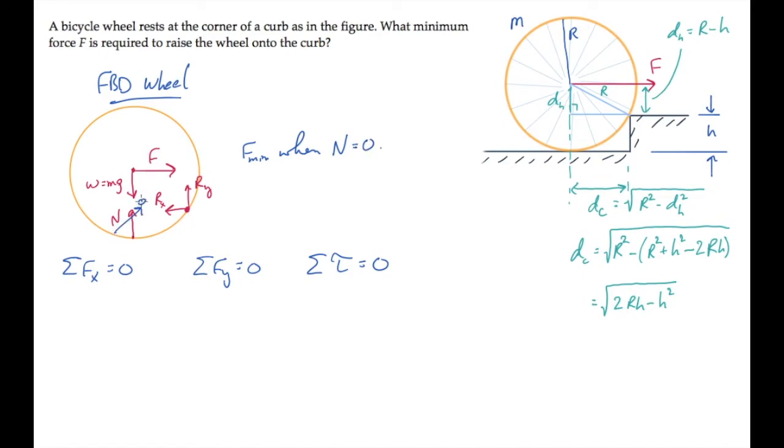This means that we can solve for the force F just by summing torques. I'll sum torques about point A, with torques out of the screen being positive. Rx and Ry create no torque about point A, so we just need to look at the torques due to force F and the weight W of the wheel.